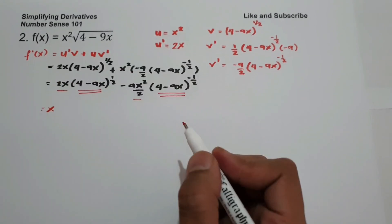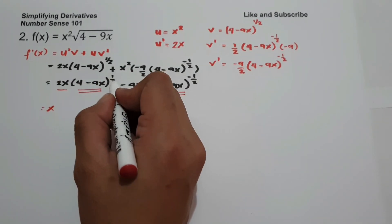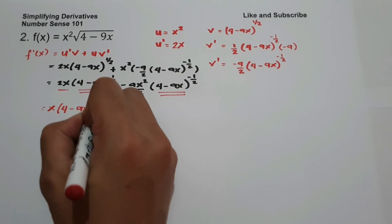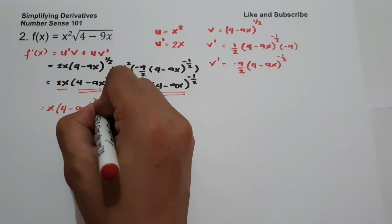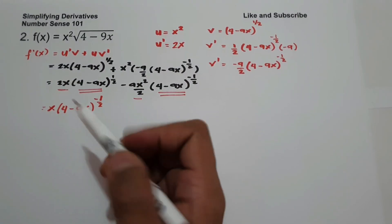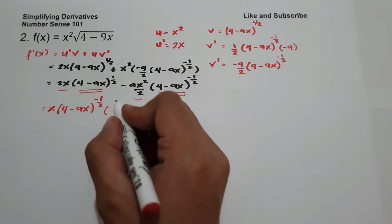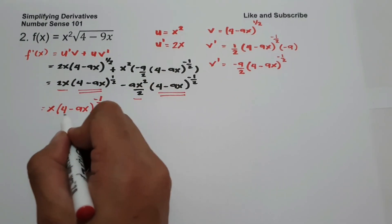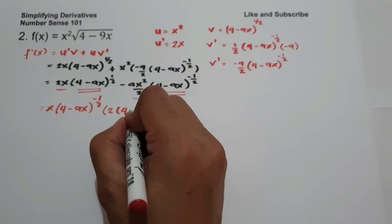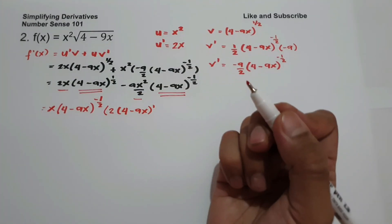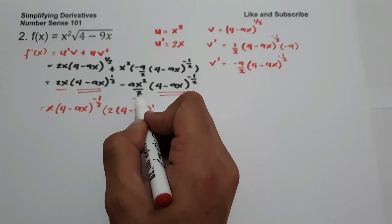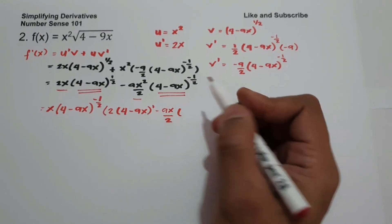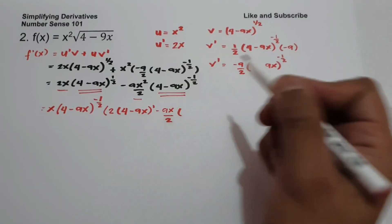The greatest common factor of 4 minus 9x raised to 1/2 and 4 minus 9x raised to negative 1/2 is 4 minus 9x raised to negative 1/2 — we take the lower exponent. Then we divide each term by the GCF: 2x divided by x is 2, and 4 minus 9x raised to 1/2 divided by 4 minus 9x raised to negative 1/2 gives 4 minus 9x raised to 1. And negative 9x² over 2 divided by x is negative 9x over 2, and 4 minus 9x raised to negative 1/2 divided by itself is 1.